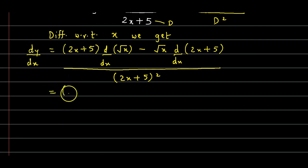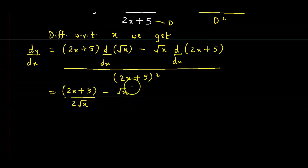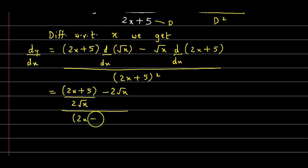The denominator (2x + 5) stays as is. The derivative of √x is 1/(2√x). Then minus √x, and the derivative of (2x + 5): derivative of 5 is 0, and 2 · 1 = 2. So we can write this as: [(2x + 5) · (1/(2√x)) − √x · 2] / (2x + 5)².